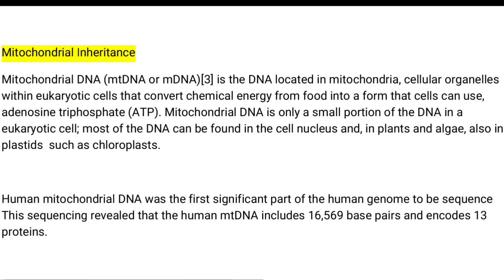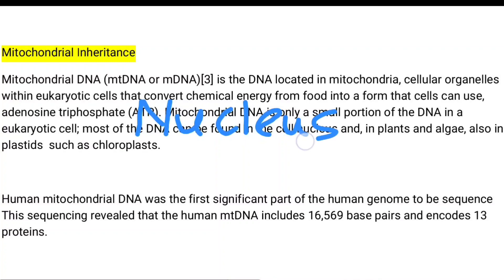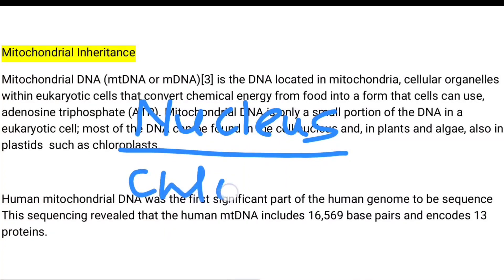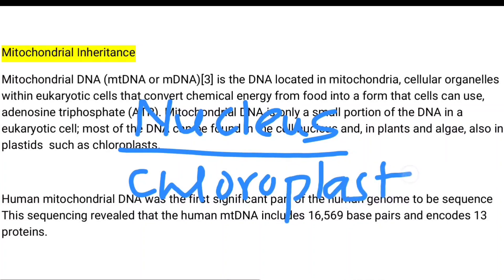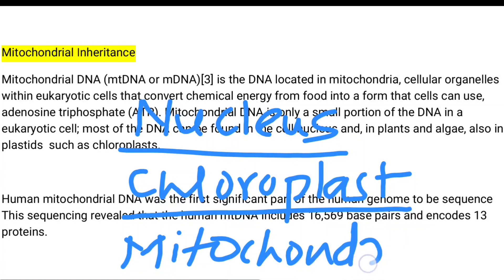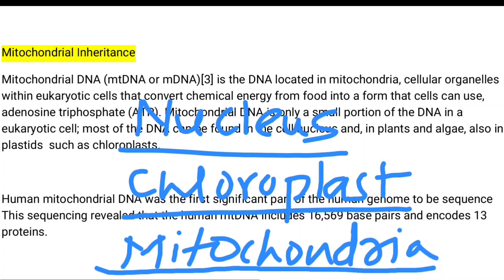Mitochondrial DNA is only a small portion of the DNA in the eukaryotic cell. Most of the DNA is found in the cell nucleus, and in plants and algae it is also found in plastids such as the chloroplast. So the three organelles that have their own DNA are: the nucleus, the chloroplast, and the mitochondria — all three have their own genome.